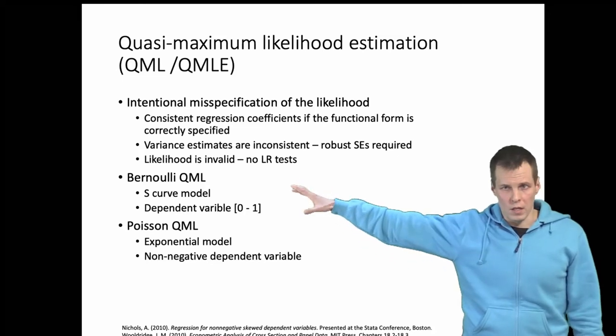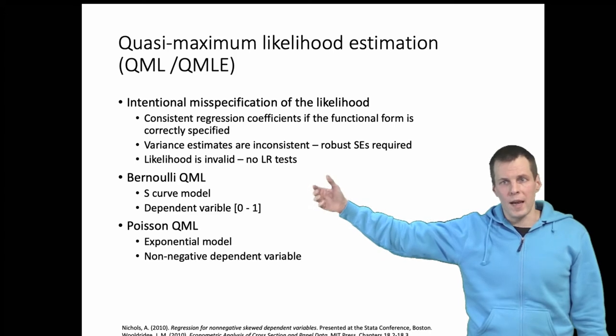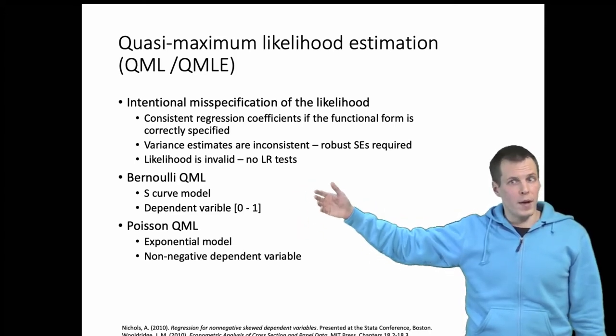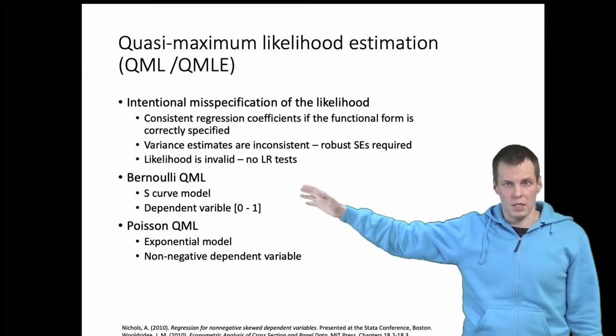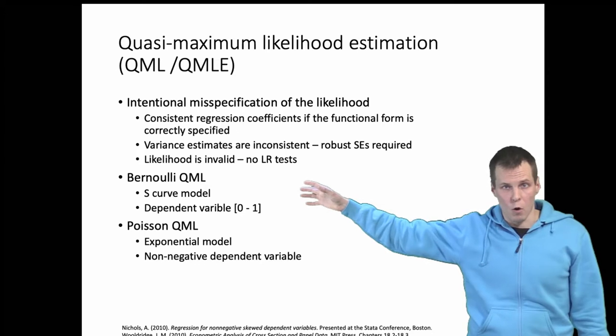The Bernoulli quasi-maximum likelihood is consistent. There could be beta-regression analysis for fractions that is more efficient but then beta-regression analysis would be inconsistent unless the distribution for the dependent variable is correctly specified.